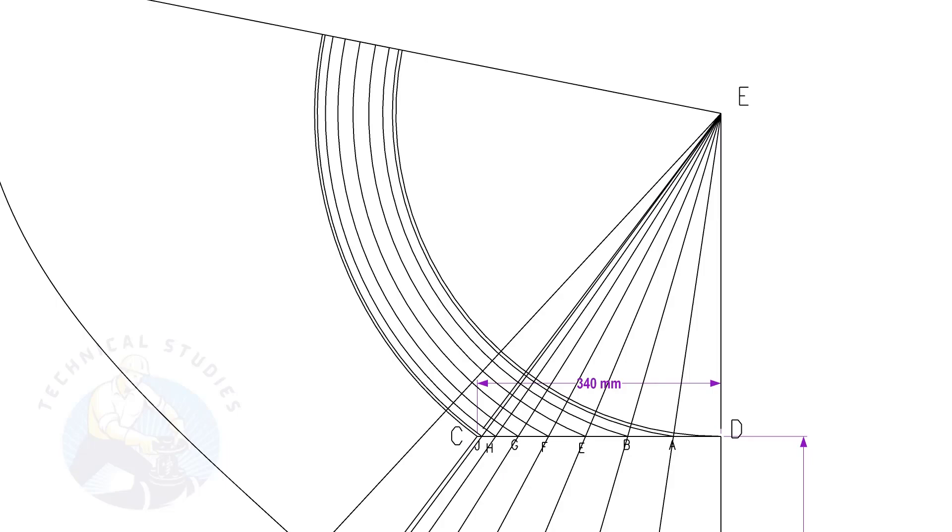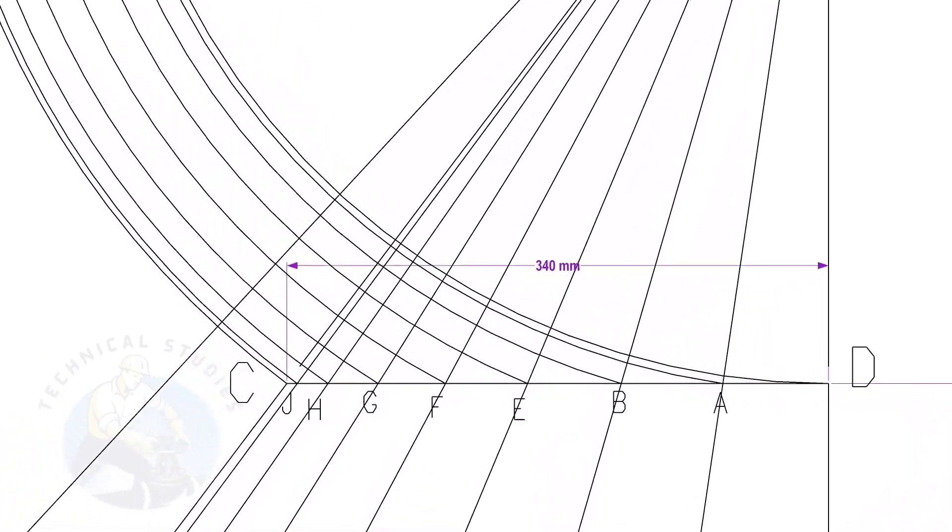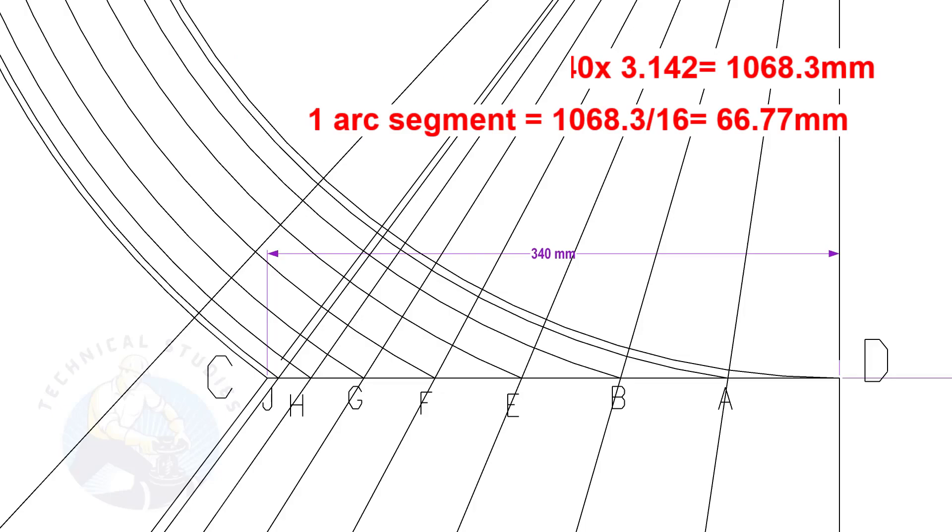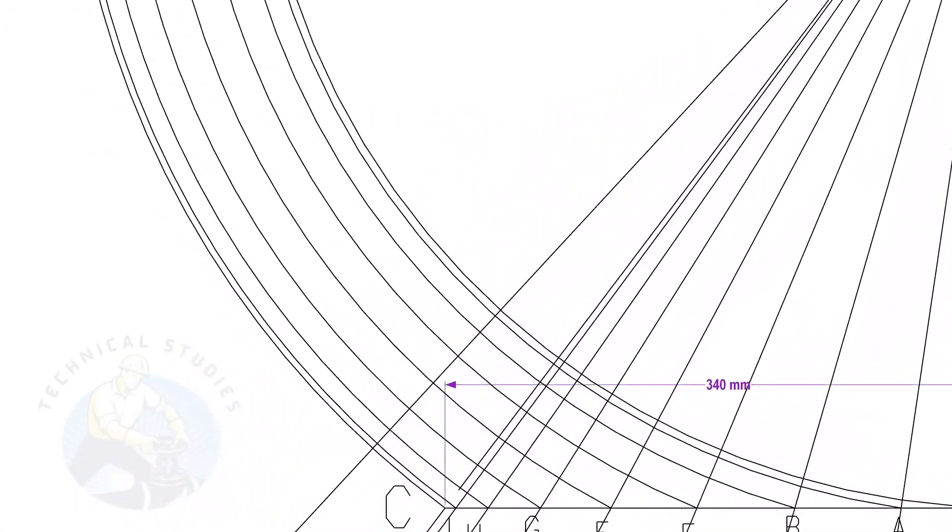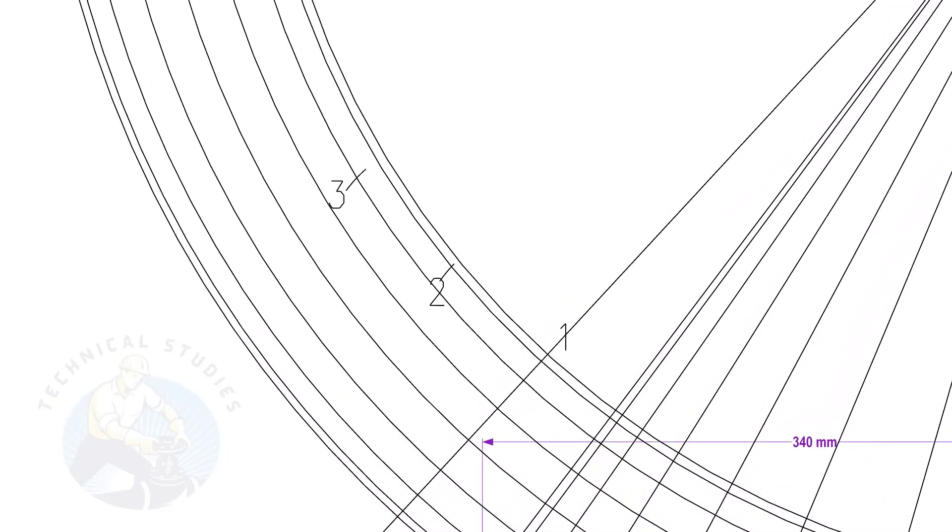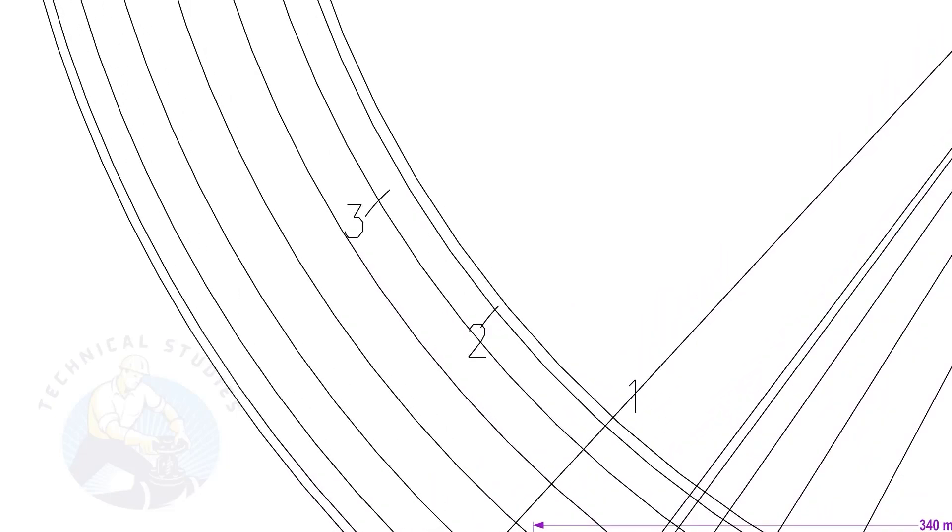Calculate the circumference of the top side and divide it by 16. Top side diameter is 340 mm. The length of one arc segment is 66.77 mm. Draw arcs as done previously.